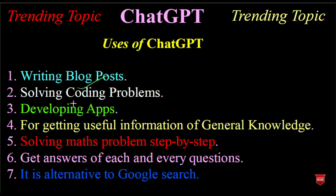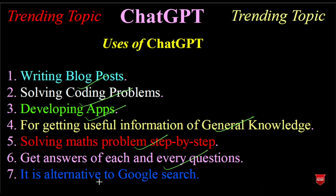The next usage is solving coding problems, and third is developing apps. Fourth is for getting useful information and general knowledge, and the fifth is solving math problems step by step. The second last is getting answers to each and every question, and the last one is it is an alternative to Google Search. Those are the common usages of ChatGPT.